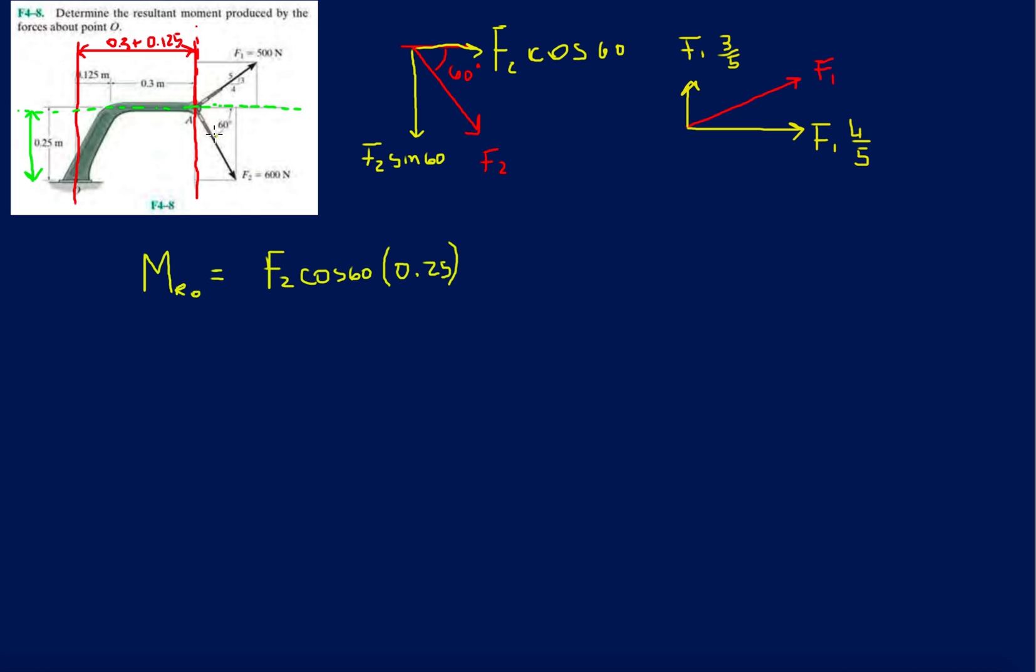Now, in which direction would it go? So we know the x component here, if you let your right hand, your fingers on the right hand follow that force and then fall towards O, they're going to be in a clockwise direction. So this is going to be negative.